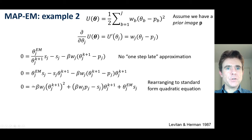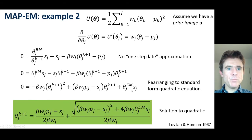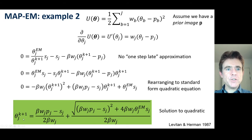This is like ax² + bx + c, which means we can use the standard quadratic solution formula. Solving for theta_{k+1}, the update is given by the prior image p in combination with the EM update image.